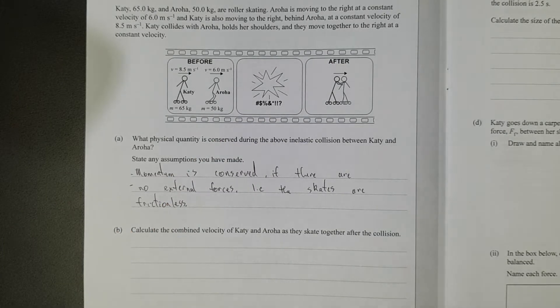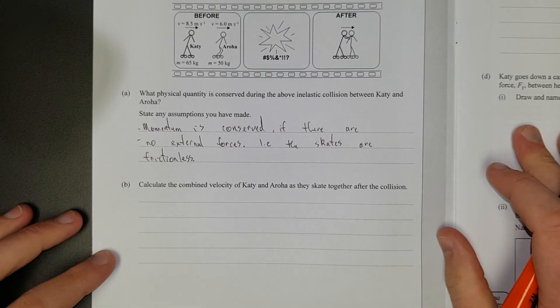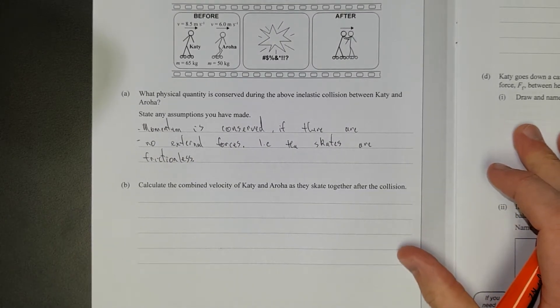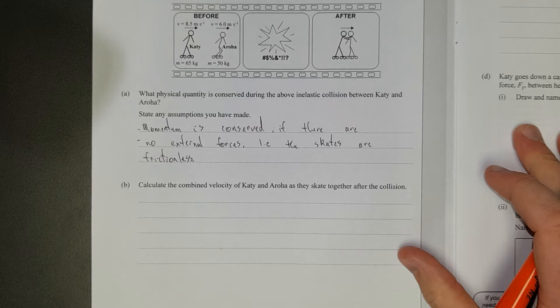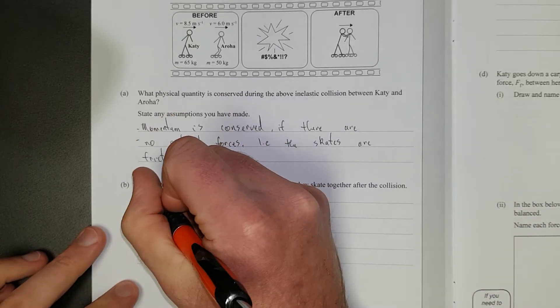Right, so I've said momentum is conserved if there are no external forces, i.e. the skates are frictionless. Right, calculate the combined velocity of Katie and Aroha as they skate together after the collision.